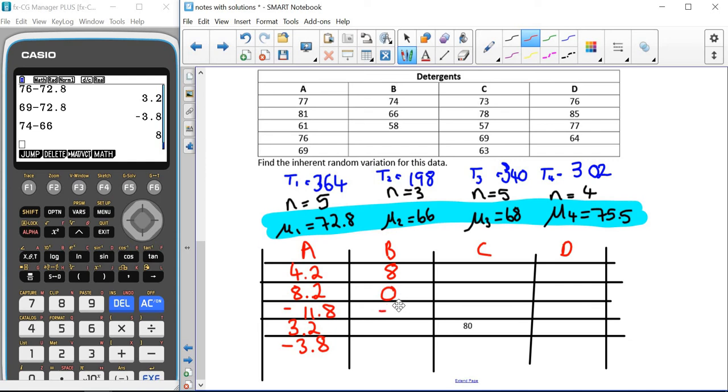So here we've got 8, 0 and minus 8 for group B. For group C, we've got 5, 10 and minus 8.2, and those average out to give us zero.